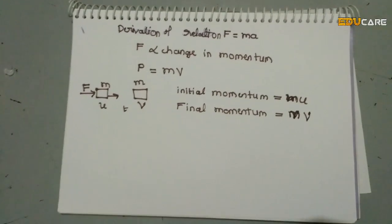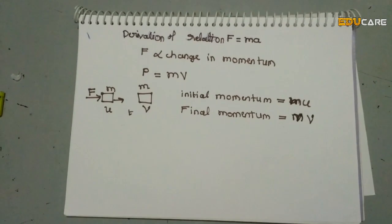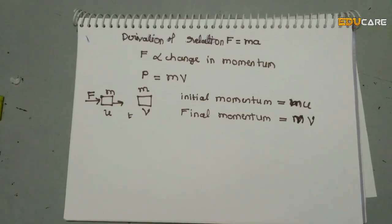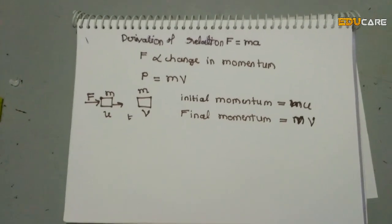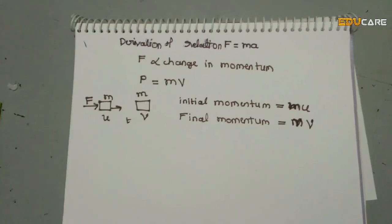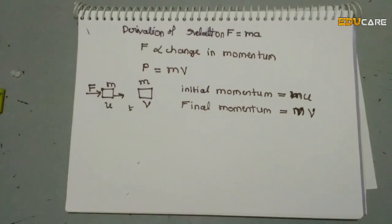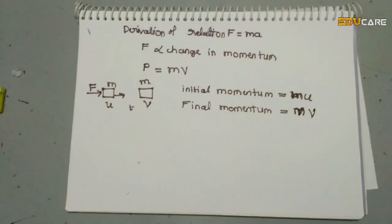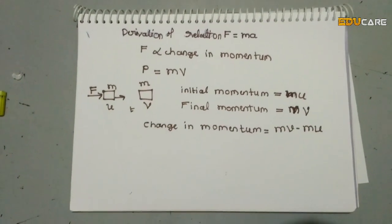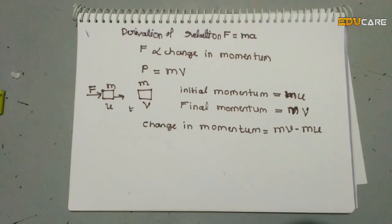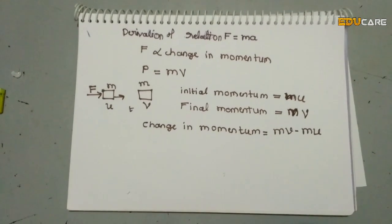This is the change in momentum — the difference between the final and initial mass-velocity products. The change in momentum is given by m into v minus m into u.